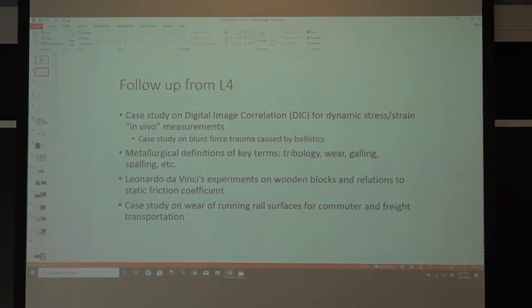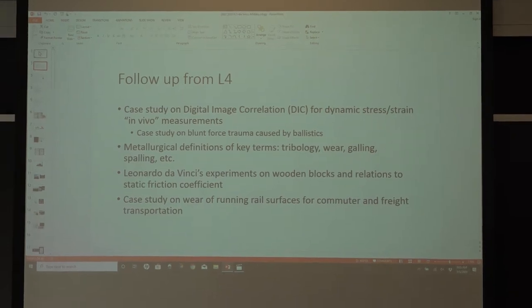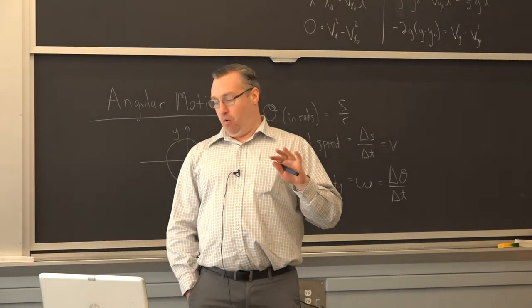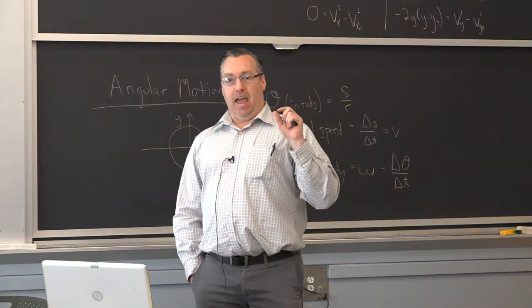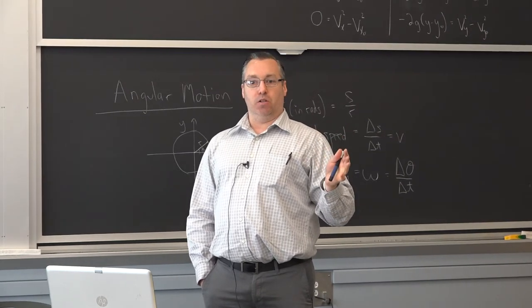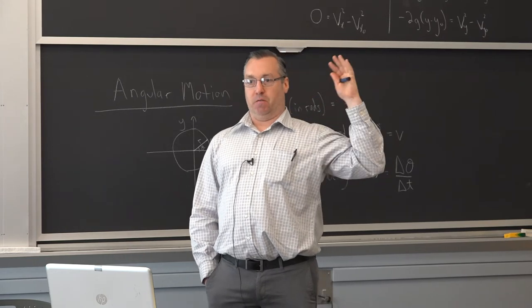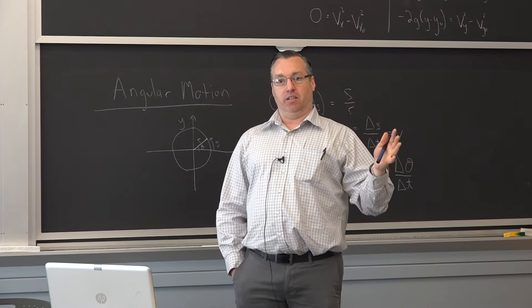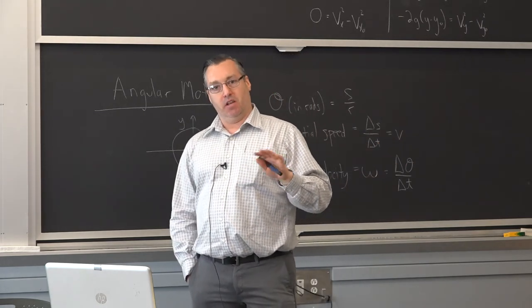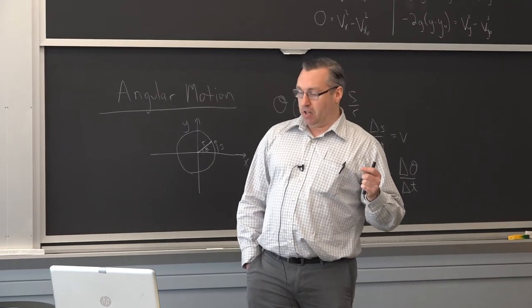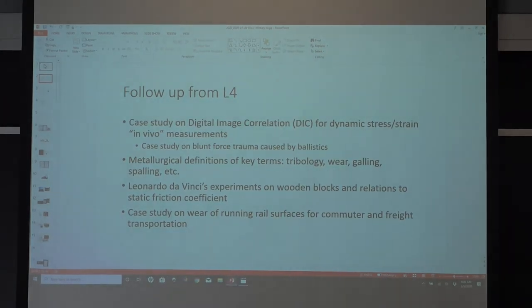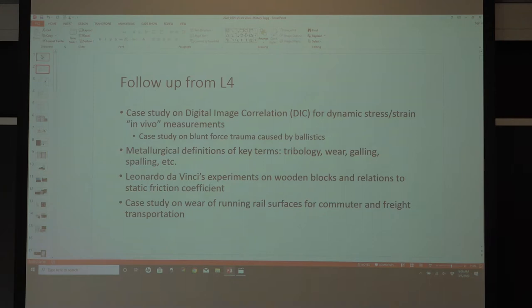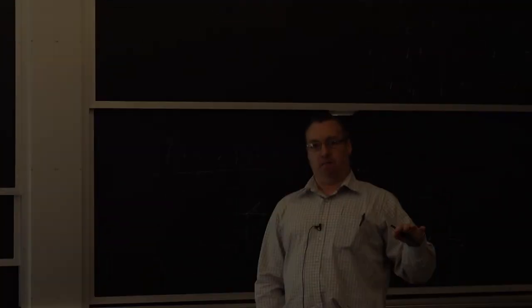As a follow up from lecture four, we discussed some non-destructive evaluation techniques, in particular digital image correlation, which can allow dynamic stress strain measurements at live speeds. The case study we talked about was for blunt force trauma to kevlar helmets from ballistics. We talked about order of magnitude that the DIC was capturing was about 5,000 frames per second. We discussed tribology, wear, and additional metallurgical considerations with respect to friction. And we also discussed da Vinci's experiments on wooden blocks with respect to static coefficients of friction, as well as kinetic coefficients of friction. And then we did a case study on running rail for commuter and freight surfaces.